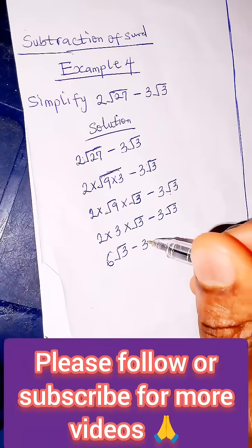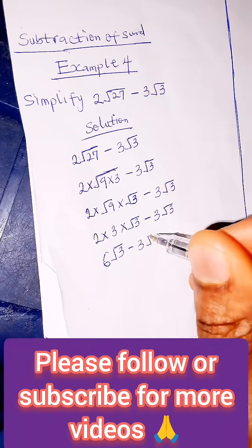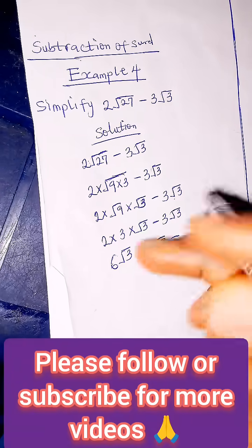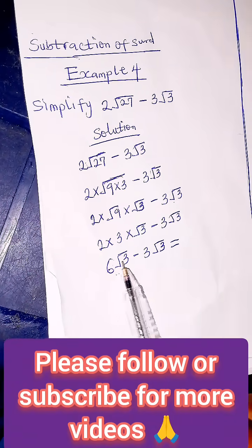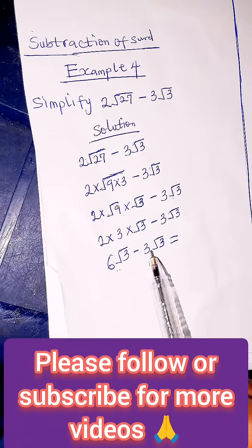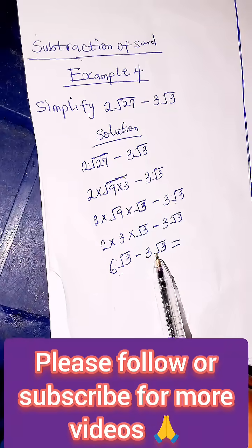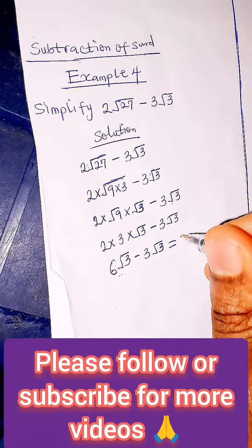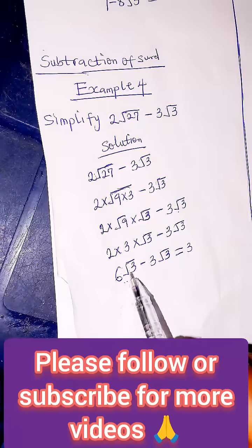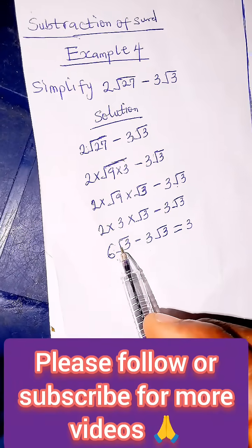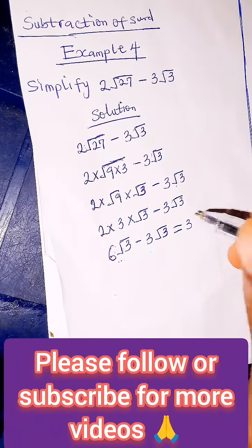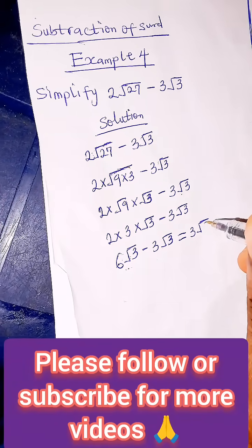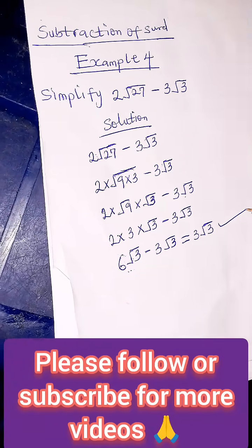6 root 3 minus 3 root 3. Since the surds are the same we just subtract. 6 minus 3 is 3. We pick one of the surds. That is our answer.